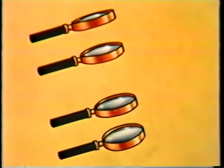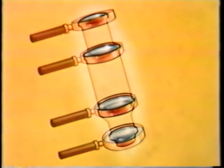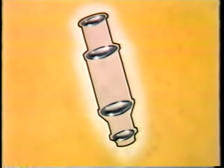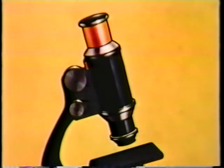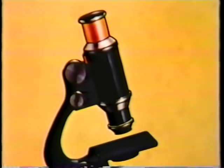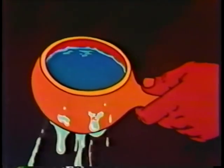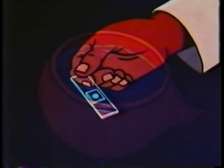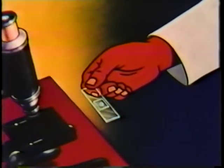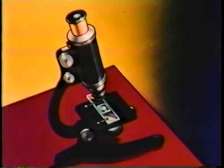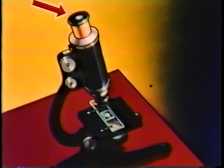Now if we take these four glasses and put a tube around them, we have a microscope — simple, isn't it? And yet by looking through this instrument we can actually see the tiny creatures that cause disease. Let's try our microscope on some of that water you were going to drink. This little piece of glass has a drop of that water on it, and we're going to look at it through the microscope. Come on now, everybody watch closely.